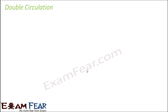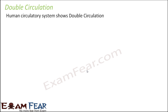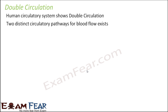Now let us see what is double circulation. The human circulatory system shows double circulation, meaning there are two distinct circulatory pathways for blood flow. One is called pulmonary circulation and the other is called systemic circulation.